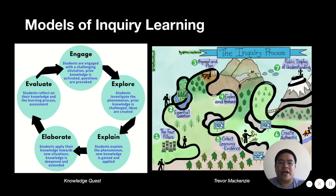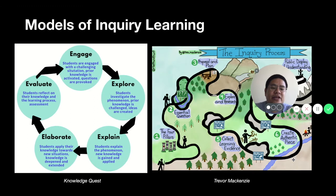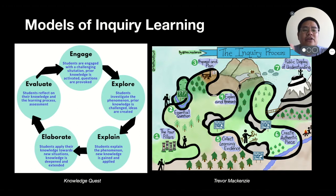Let's also take a look at the work of Trevor McKenzie in his book Dive into Inquiry, where he shows us the pathways that students take as they go through their inquiry journey. They have different essential questions that lead to a proposal and plan of action. With that plan of action, they begin exploring and research. Along the way, they can reflect and revise their questions and their exploration and research, leading them to collect more learning evidence and further reflection. Moving towards the end, they create authentic pieces of their understanding — their own models or demonstrations of what they've learned — and share that in their community as a public display of their understanding.